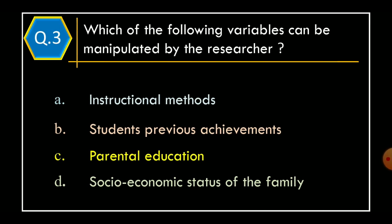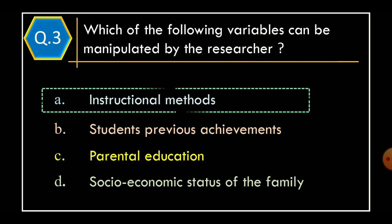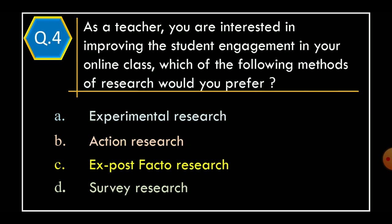Question 3: Which of the following variables can be manipulated by the researcher? Option A: instructional methods. Option B: students' previous achievements. Option C: parental education. Option D: socio-economic status of the family. The correct option is Option A, instructional methods.